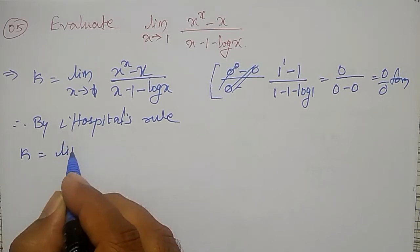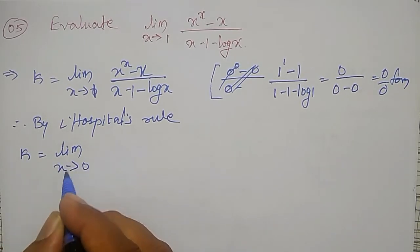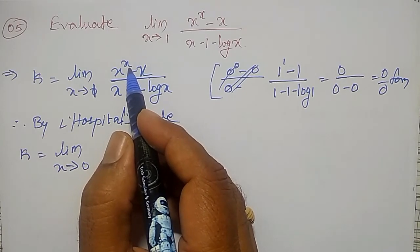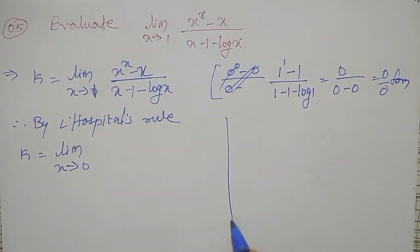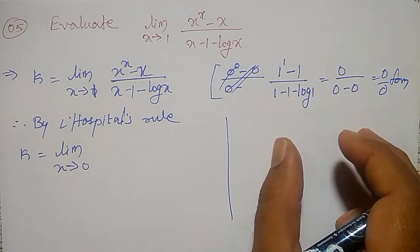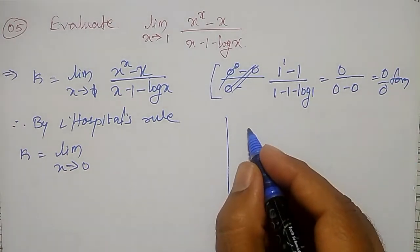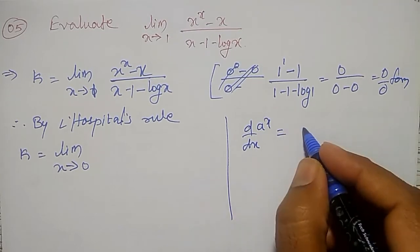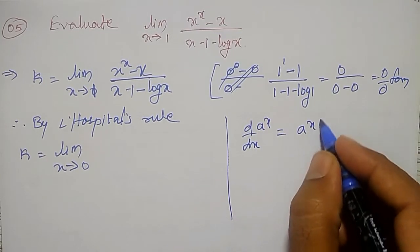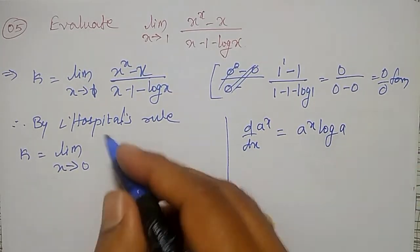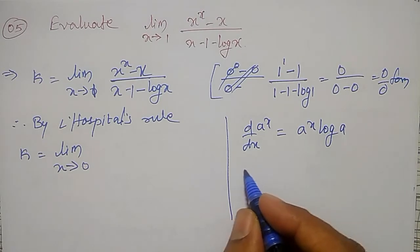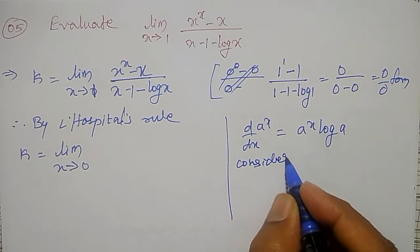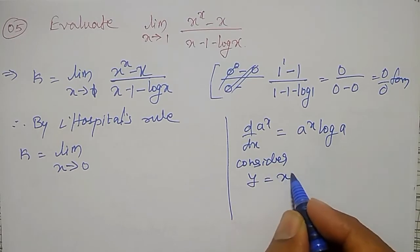k is equal to limit as x tends to 1, differential of numerator x raised to x. What is the differential of x raised to x? We don't know that directly. Let me find it on the side and then use it here. We know the derivative of a raised to x is a raised to x into log a, but here it is x raised to x. For that reason, let me consider, for simplicity, y is equal to x raised to x.